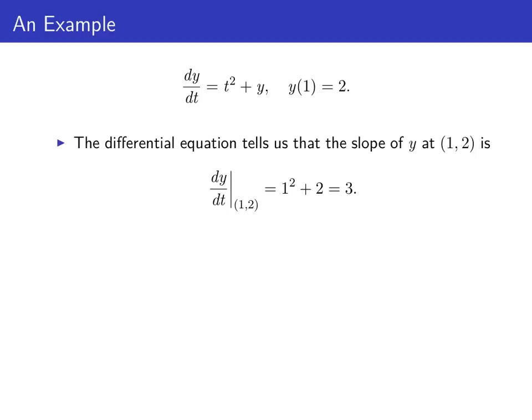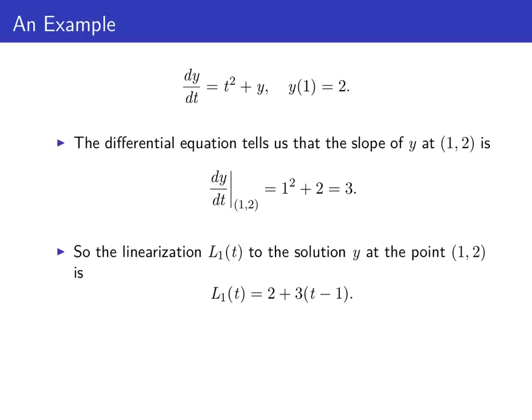We'll use the differential equation at the initial point, substituting in 1 for t and 2 for y, to find the slope of our solution y at that point. The slope is dy/dt at that point, and that's 1² + 2, or 3. We can then find the linearization to our solution using point-slope form, taking the old y value, which is 2, at t = 1, and adding the slope times the change in t, which in this case is t − 1.